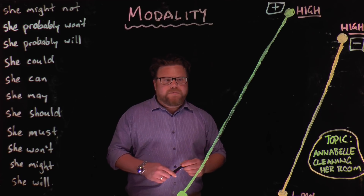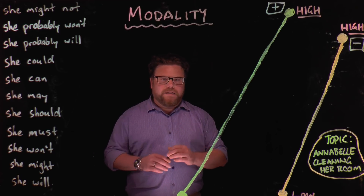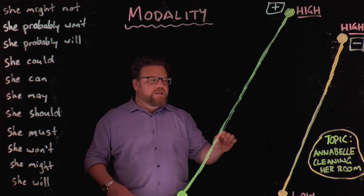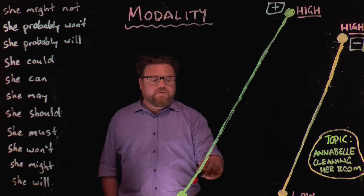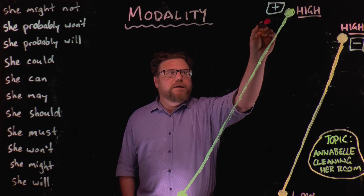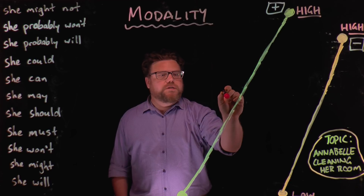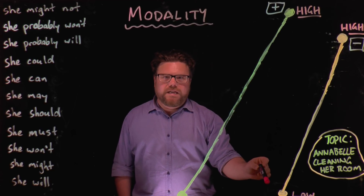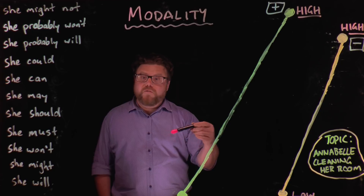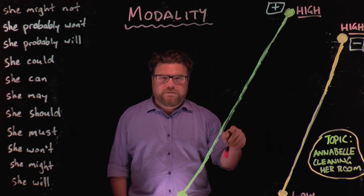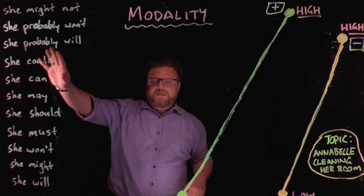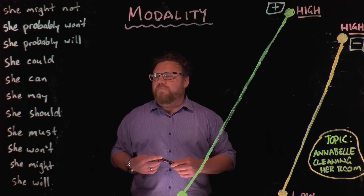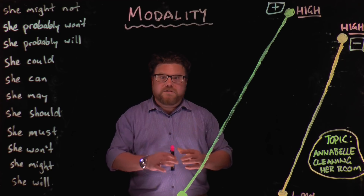It is not about whether something is in itself likely or unlikely. To give you a really clear picture of this, we're going to look at this scenario here. Our topic is Annabelle cleaning her room. I've got two lines here — one is to show the degrees of certainty in a positive way, and the other is to show the degrees of certainty in a negative way, to show that you can have high modal verbs that are either positive or negative. I've got all these different phrases to describe the topic of Annabelle cleaning her room, and we're going to plot these onto the two lines.